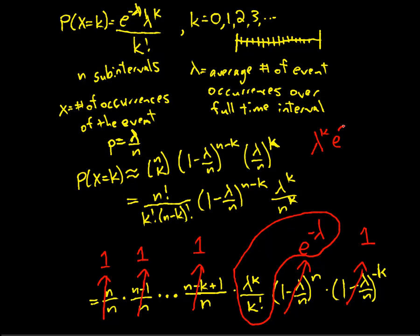Lambda to the k, e to the minus lambda all over k factorial. Now, sometimes you'll see these two terms switched. One way is not better than the other. And of course, multiplication is commutative, so we can switch those around. It doesn't change anything. But this is where that strange formula for the Poisson distribution comes from. It comes straight from the binomial distribution.